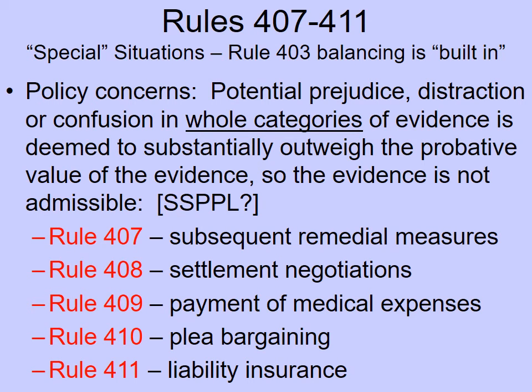Getting back to the rules, the next four rules — Rules 407 through 411 — have one important thing in common: policy concerns led the rule drafters to categorically decide that these specific types of evidence should not be admissible. It's conceivable these determinations could have been made by applying Rule 403 on a case-by-case basis, but instead the 403 balancing has been done in advance — the potential prejudice, distraction, or confusion inherent in these categories has been deemed to substantially outweigh the probative value.